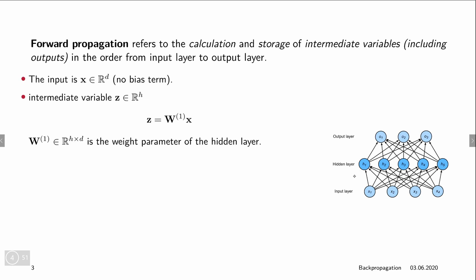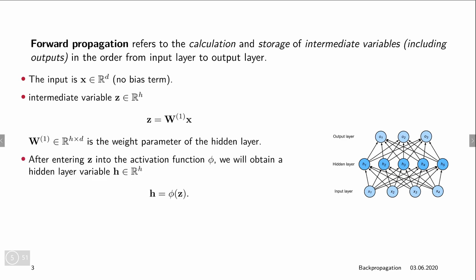Now realize that z doesn't appear in this neural network directly, so it's an intermediate variable which is then plugged into our nonlinear activation function phi. This is a placeholder for any of the activation functions that we have seen, to compute the hidden layer variable h. Because phi is an element-wise operation, h has the same dimension as z.